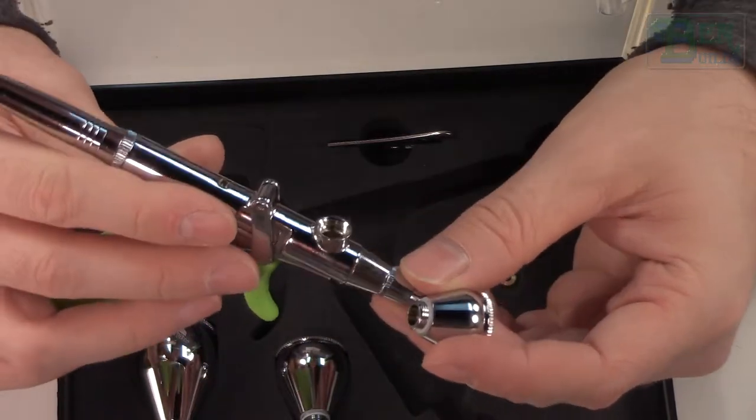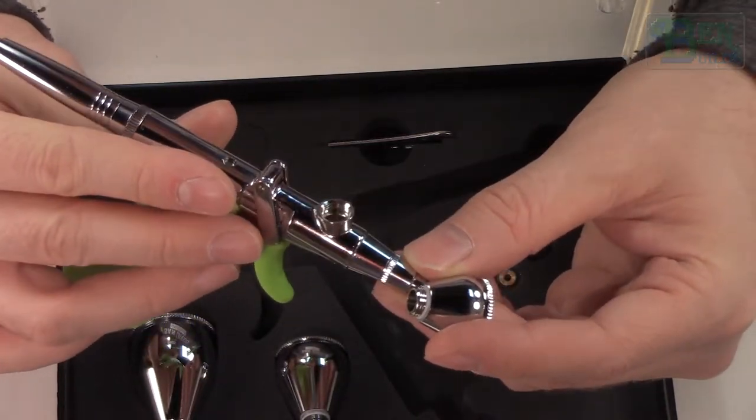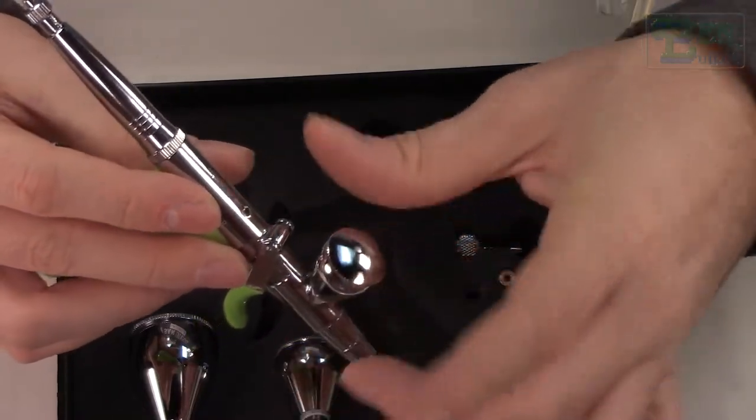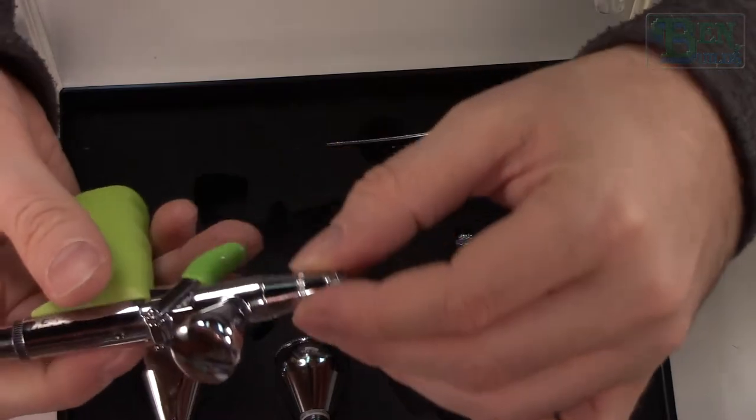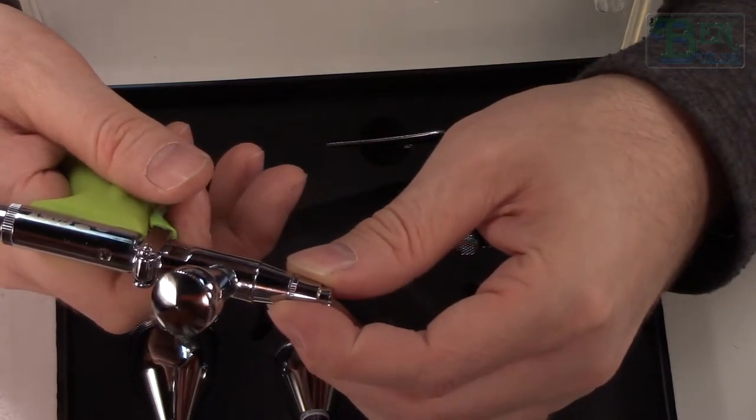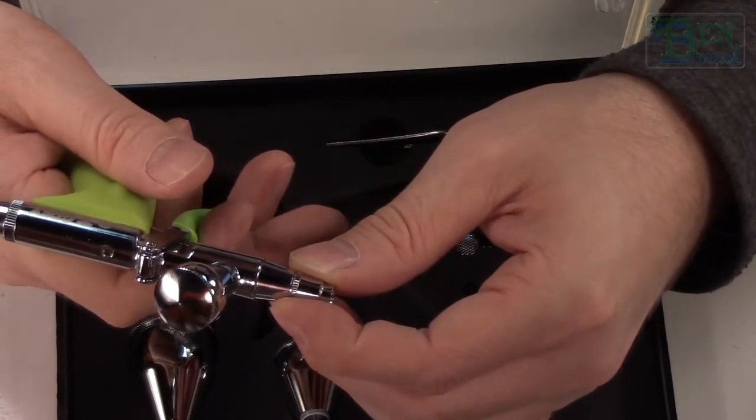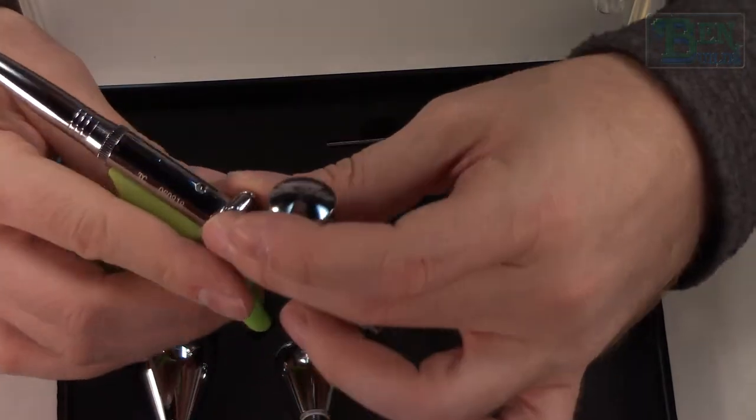We have replaceable and interchangeable paint cups, which is really nice. Looking inside there, you got the needle inside, should be a 0.3 needle. Let's go ahead and thread this back on. Yeah, look at that, very cool. Trigger pull is interesting. It's very smooth. You can tell where it's just air and then when it gets air and paint, you kind of feel that in the lever. Interesting.